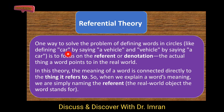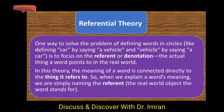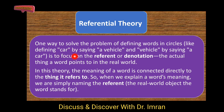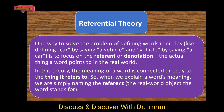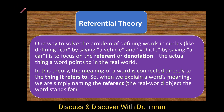One way to solve the problem of defining words in a circle — like defining 'car' by saying 'a vehicle' — ایک طریقہ یہ ہے کہ ہم الفاظ کو circular form میں define کرتے ہیں۔ For example, in the dictionary 'car' means 'a vehicle,' and 'vehicle' means 'a car' — so this is a circular way to define meaning. But another approach is to focus on the referent, things that exist in the outside world.